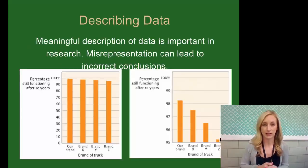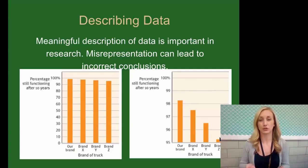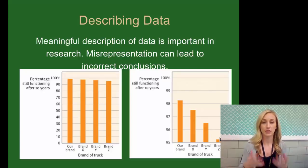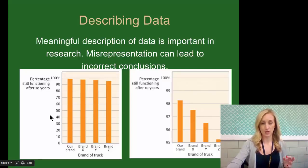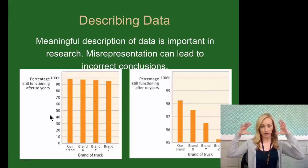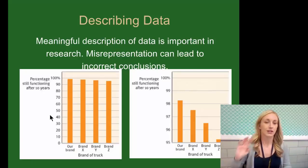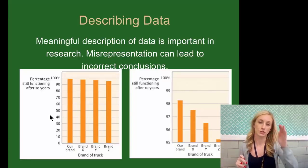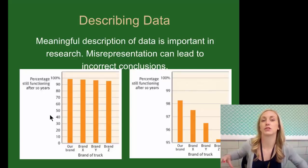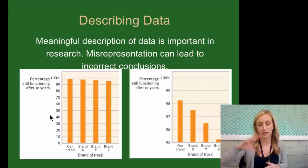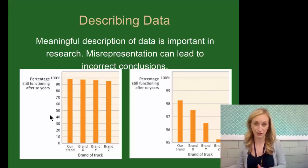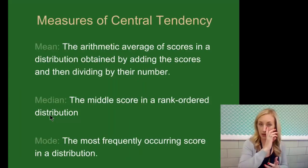There's describing data that we can get from statistics. A meaningful description of data is important because misrepresentation can lead to incorrect conclusions. Looking at two graphs: the graph on the left is a more backed-out version — the percentage still functioning after 10 years from 0 to 100% shows very little variation in those four columns. But if you zoom in from 95 to 100%, it looks as if there's a lot of variation. There can be a misrepresentation there.